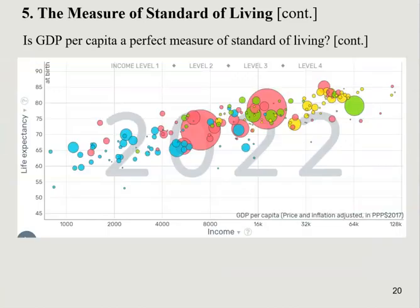I made these graphs from the website called Gapminder — G-A-P-M-I-N-D-E-R. If you're interested, you can go there and make your own; it's super easy. These Gapminder graphs often have multi-dimensional data. The horizontal axis is income, measured by GDP per capita with inflation adjustment.